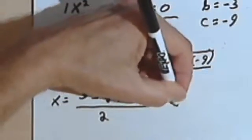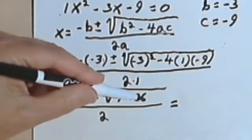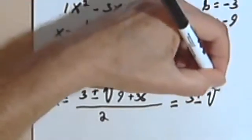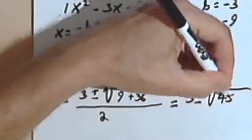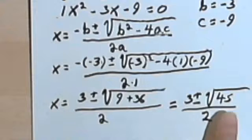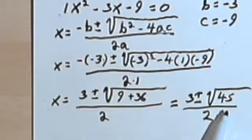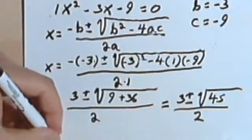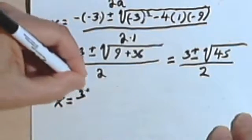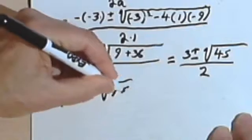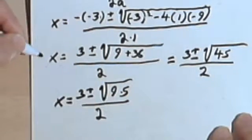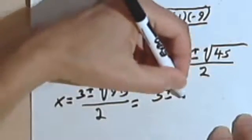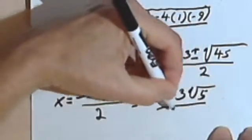Okay, now before I run out of room, I'll continue over here. So the next step is I want to combine this 9 and the 36. So now I've got that x = 3 ± √45 / 2. And now I've just got to simplify the square root of 45. 45 is not a perfect square, but 45 is 9 times 5, and 9 is a perfect square. So x = 3 ± √(9×5) / 2. Taking the square root of 9, that's 3. So x = 3 ± 3√5 / 2.